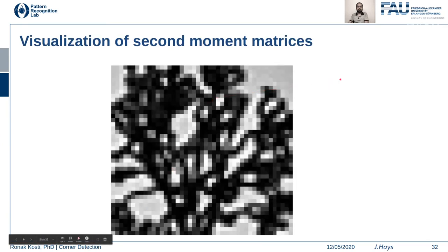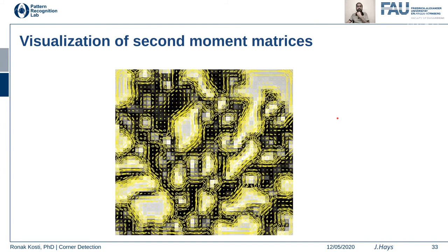In a visualization example, you can see moment matrices computed across a whole grayscale image. Many ellipses are well-aligned along the edges and corners, while in flat/planar areas they basically vanish. You can see different shapes of these ellipses near edges and corners.